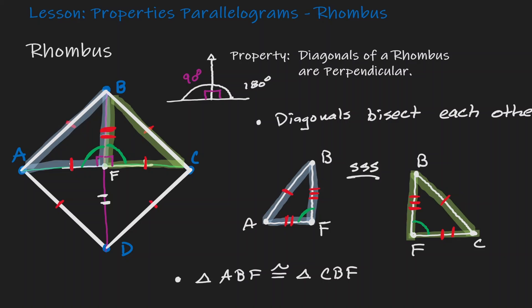The only value that will make this happen is if they are each 90 degrees. Therefore this intersection is 90 degrees, indicating that AC is perpendicular to BD. We have shown that diagonals in a rhombus will always be perpendicular to each other.